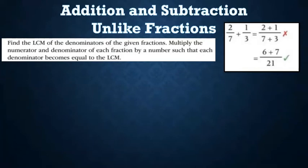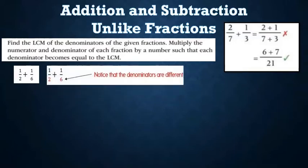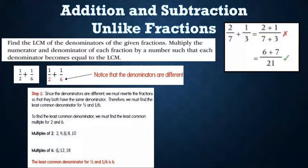Now let us check an example of adding unlike fractions: 1/2 + 1/6. We notice that the denominators are different — 2 and 6. So step one: since the denominators are different, we must rewrite the fractions so that both have the same denominator. In other words, we must find the LCM of 2 and 6, which is 6.